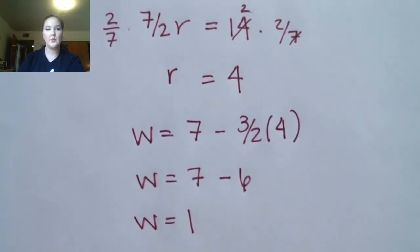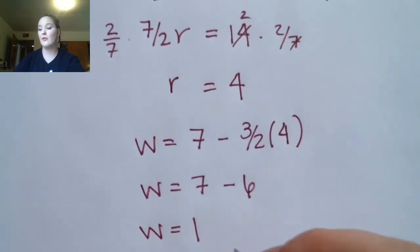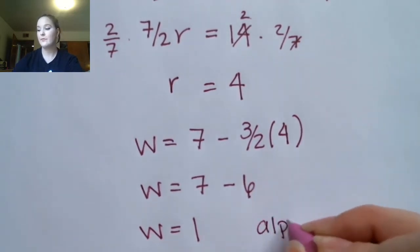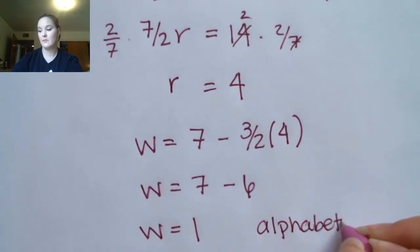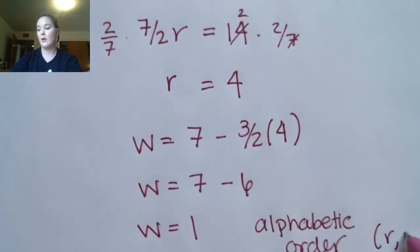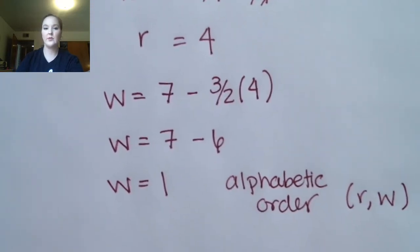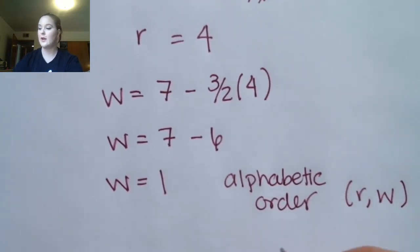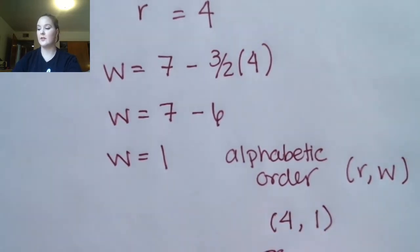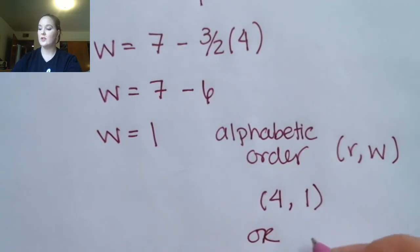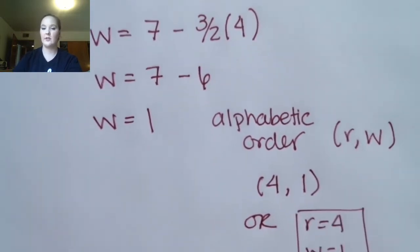A question I commonly get with this textbook: if you're using an ordered pair and the variables are not x and y, how do you order them? You just do it alphabetically. So you would have R comma W, meaning this answer would be 4 comma 1. You could also just say R equals 4, W equals 1, and box your answer like that.